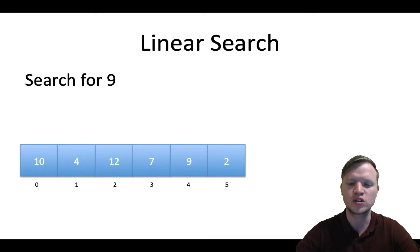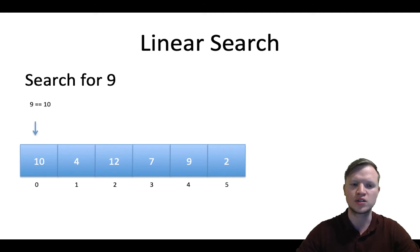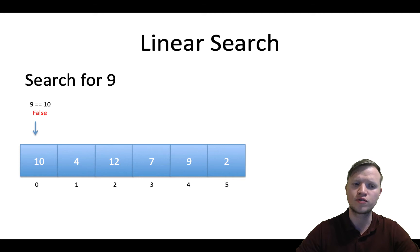It works its way up to the last element. First we look at the first element and we ask ourselves: is 9 equal to 10? The value we are searching for — is it equal to this current element's value? Is 9 equal to 10? False. If it's false, we continue to the next element.